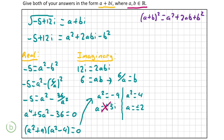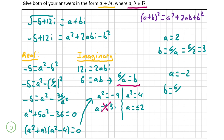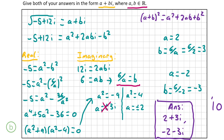From here we substitute our values for a into the formula b = 6/a to find our two solutions for b. For a = 2, b = 6/2 = 3, and for a = -2, b = 6/(-2) = -3. Putting our answers in the form a + bi, our final answer is 2 + 3i and -2 - 3i, and finding this will give you the full 10 marks for this question.